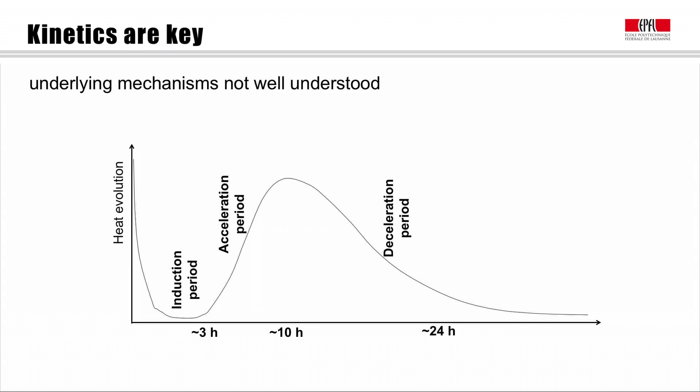And then after typically something like three hours, the reaction takes off again. We have what's called the acceleration period. After about ten hours then it starts to slow down again in what we call the deceleration period. And after the first day or so, the rate of heat reaction is really quite low, even though at twenty-four hours we may only have formed about twenty-five percent or less of the final strength of our concrete. So there's quite a lot happening after the first day, but it's happening much more slowly.